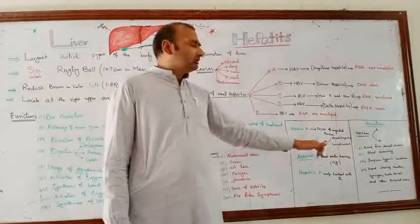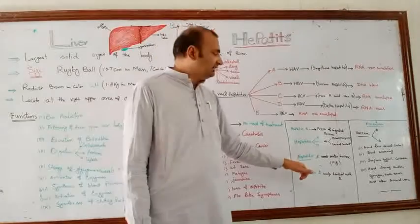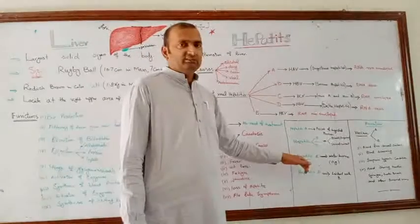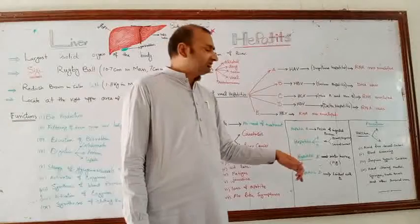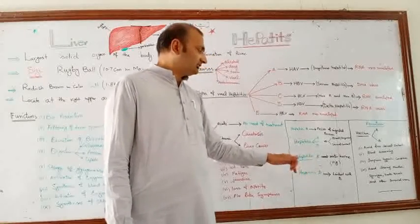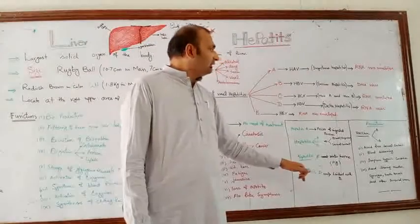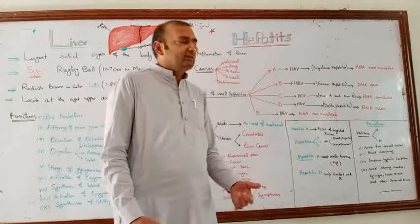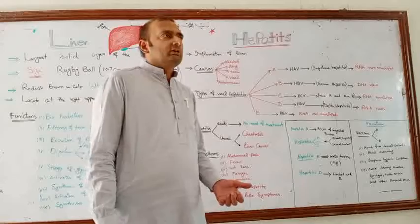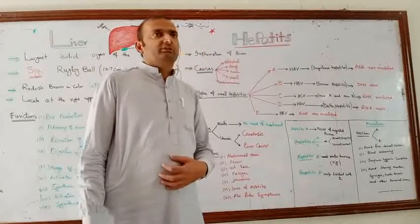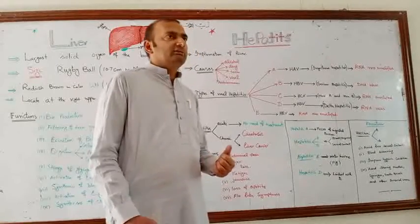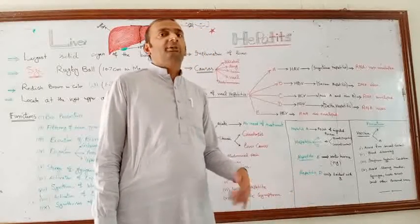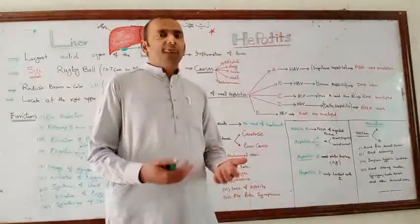Hepatitis B, C, and D are spread through blood transfusions, contaminated syringes, razors, and through unprotected sexual contact. Hepatitis C may consider the pig as a reservoir source. Hepatitis D is linked with hepatitis B — if a patient has hepatitis B, they may also develop hepatitis D. Hepatitis D cannot occur alone; it is only present when the patient is co-infected with hepatitis B.